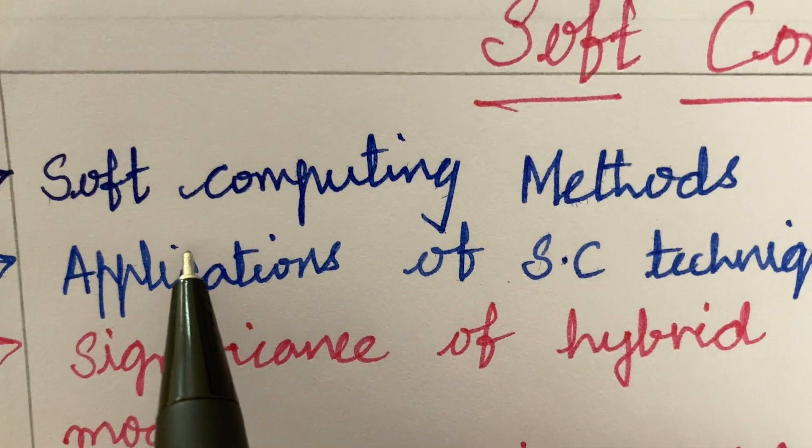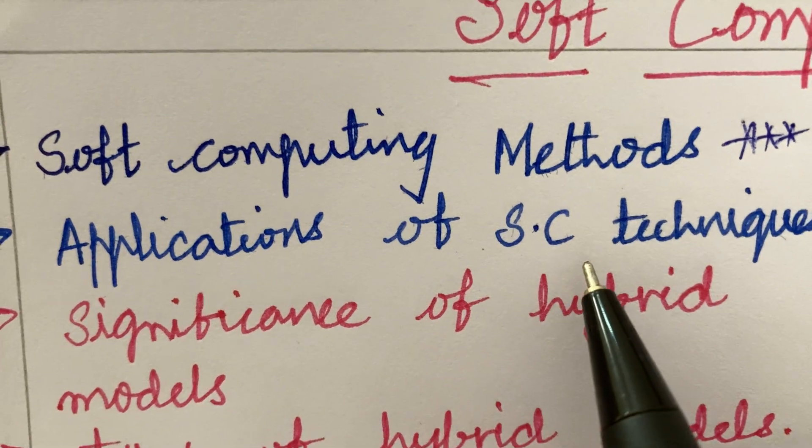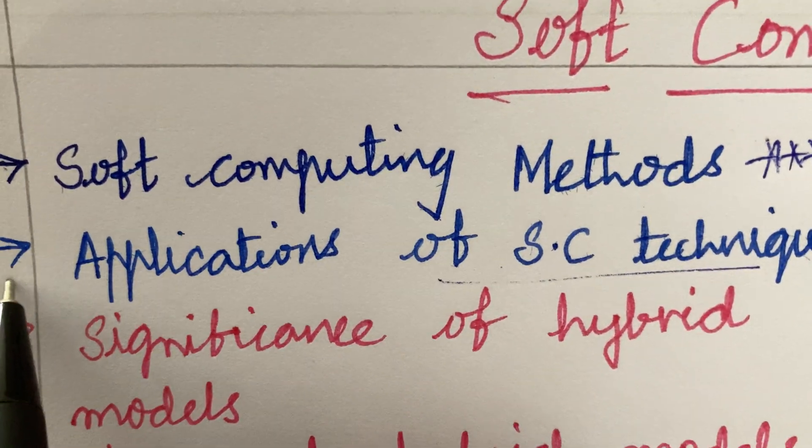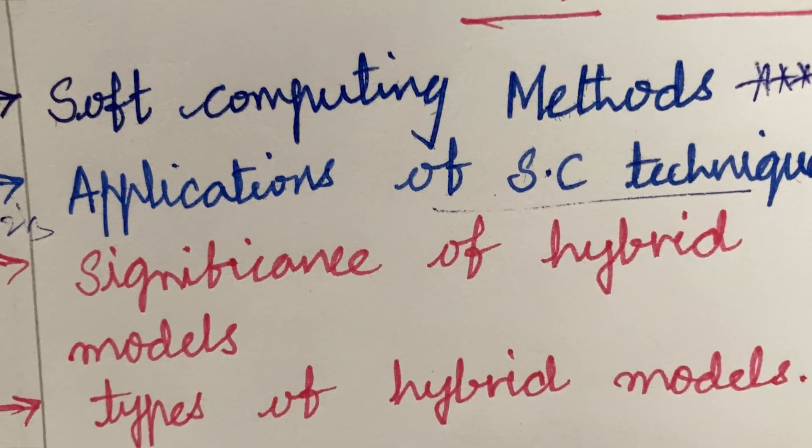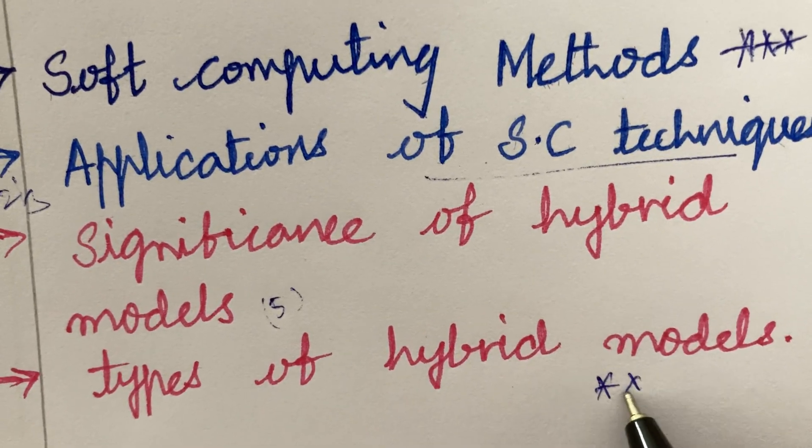The first and foremost question is that soft computing methods is said to be a gunshot question. The applications of soft computing techniques is a 2 and 3 mark question and the significance of hybrid models is a 5 mark question.